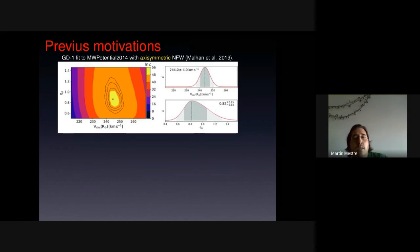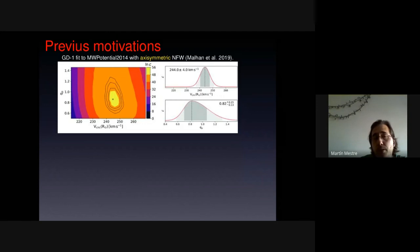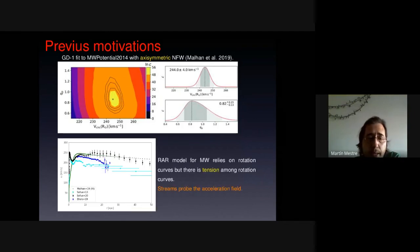Some previous motivations. There has been a fit of the GD1 stream to an axisymmetric dark matter halo, and the result was that the flattening was 0.8, compatible with 1, so it is compatible with the spherical halo, but the maximum was in 0.8. So one motivation is, can we fit the GD1 stream with the spherical halo with the RAR model?